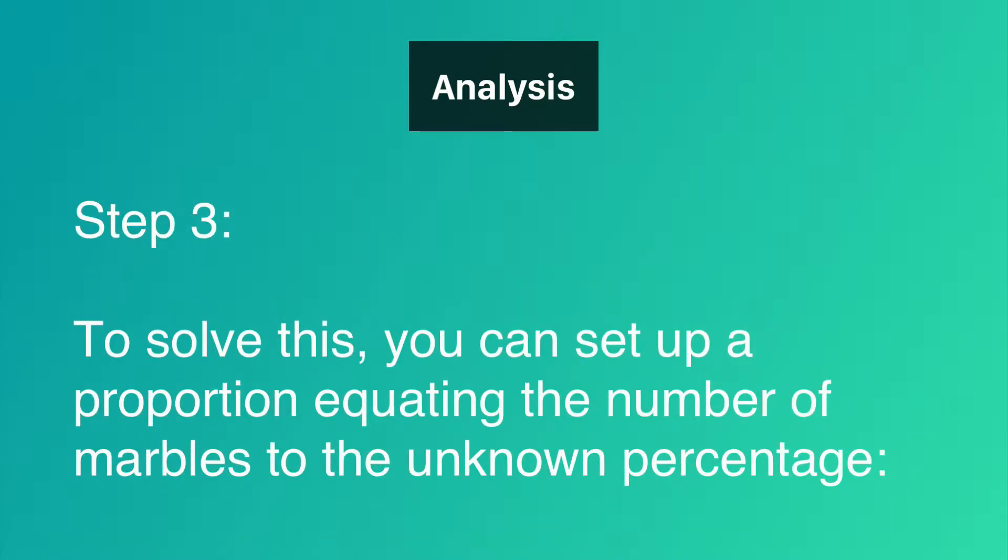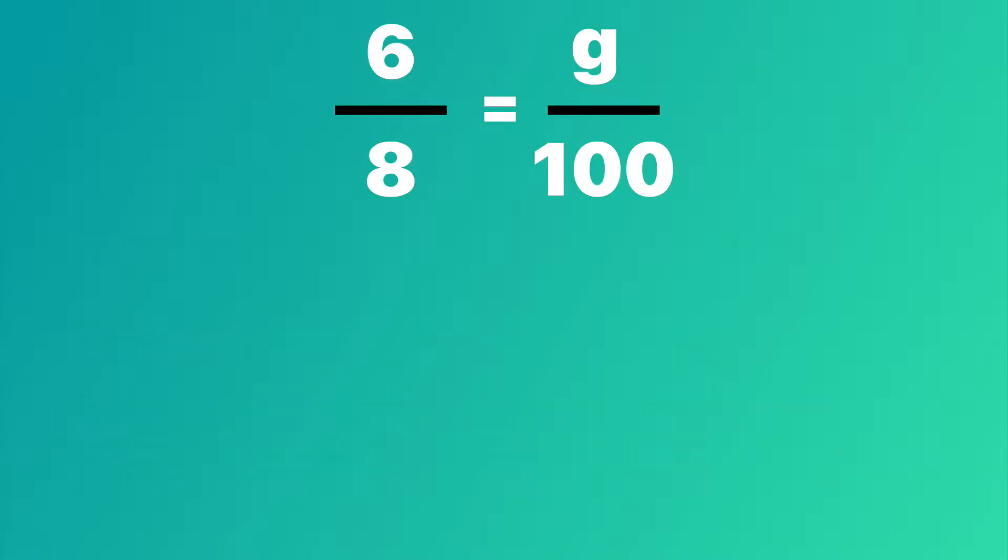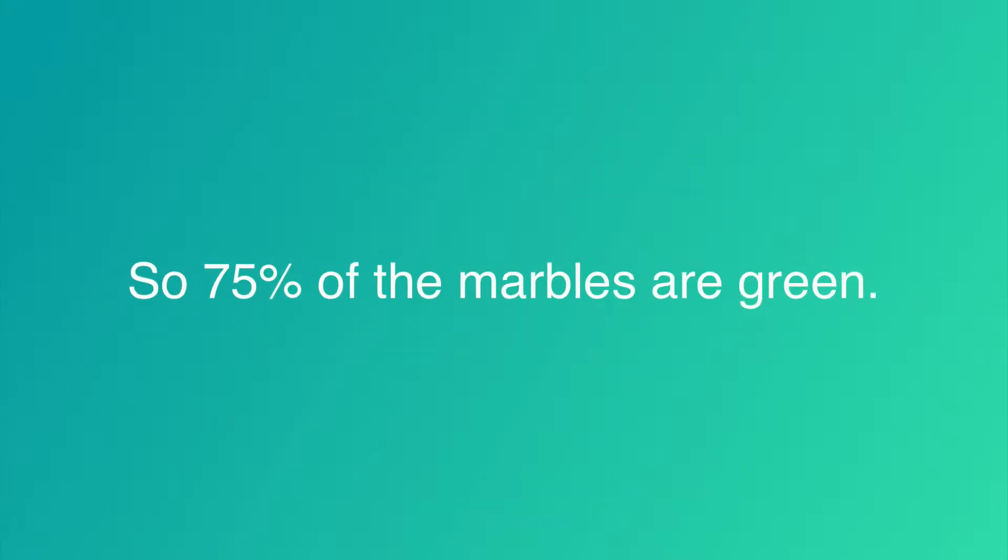Step three. To solve this, you can set up a proportion equating the numbers of marbles to the unknown percentage, like so. And then we just continue to simplify. So 75% of the marbles are green.